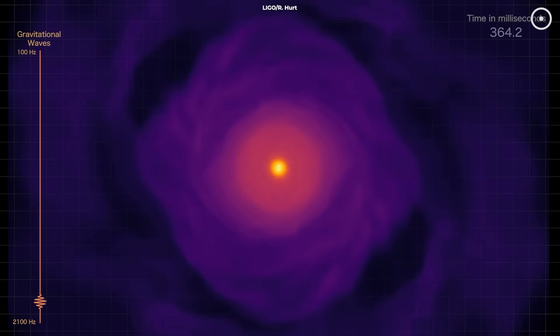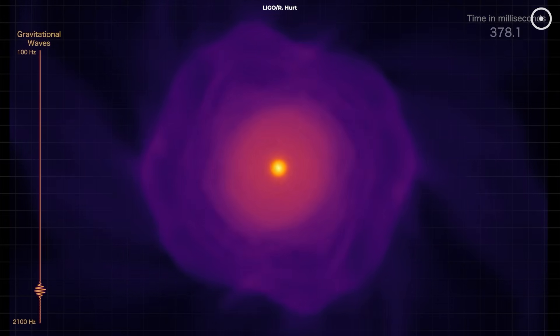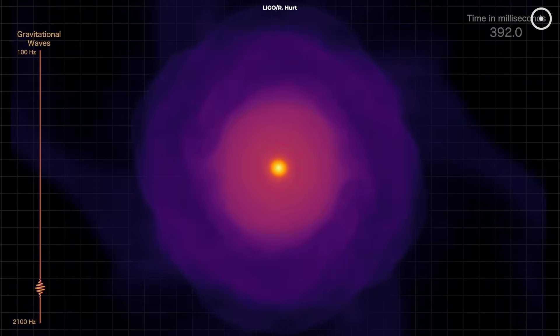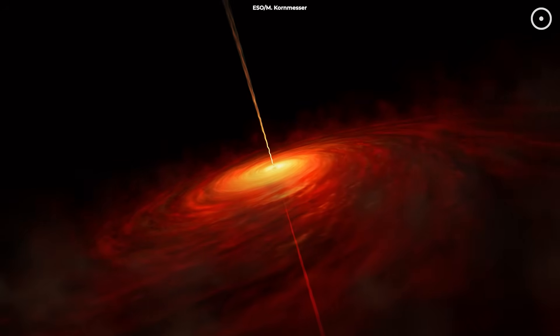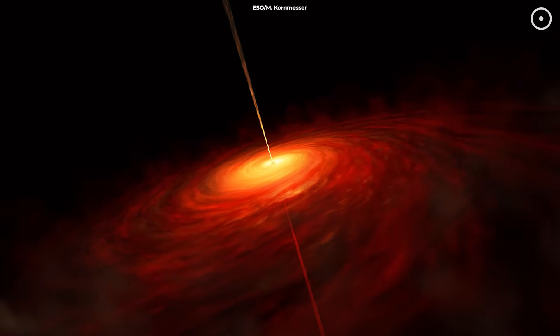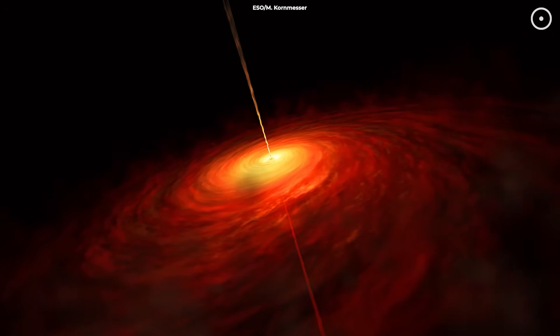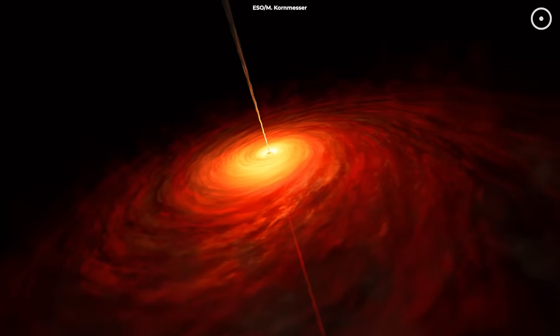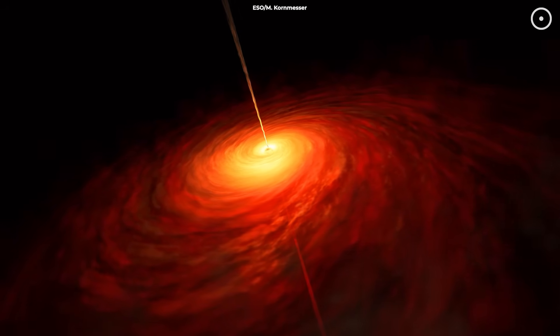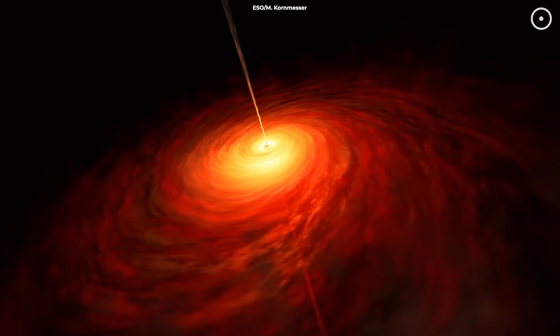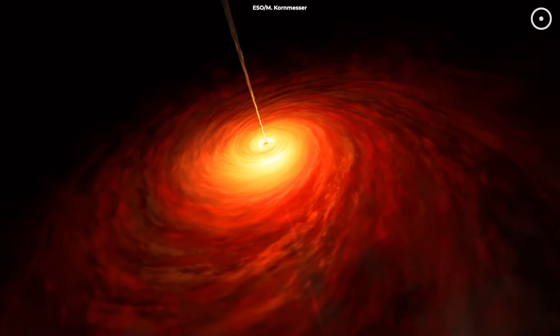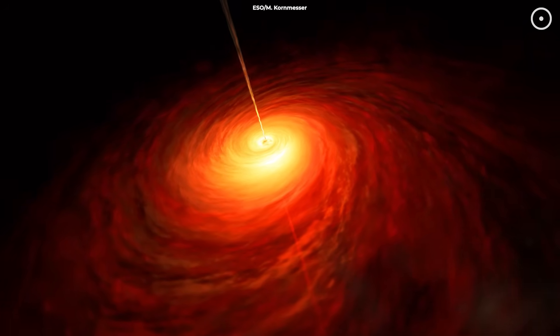But black holes don't just shake spacetime, they also influence entire galaxies. Supermassive black holes like the one at the heart of the Milky Way, Sagittarius A-Star, exert a massive influence on their surroundings and sometimes even the entire galaxy. How? Through their incredible gravitational pull and the energy they release.